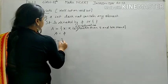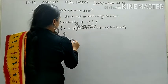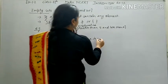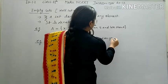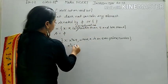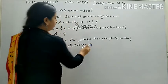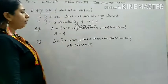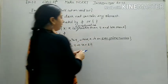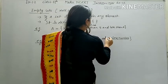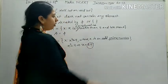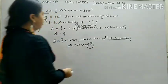Let's take one more example. If I have a set where x² = 4 and x is an odd prime number, solving gives x = ±2. Now 2 is an even prime number, not an odd prime number, so this set will be empty (φ).